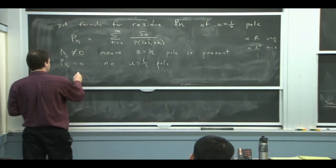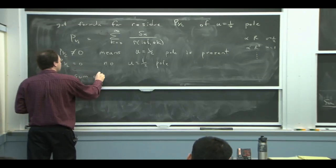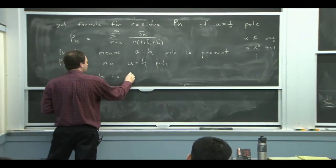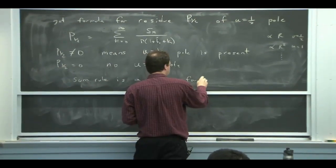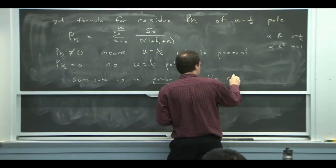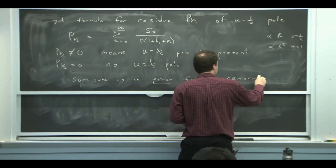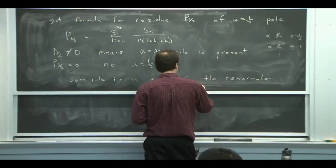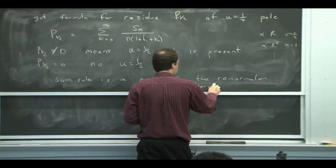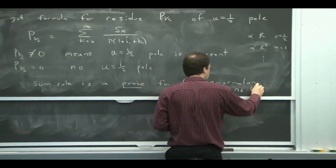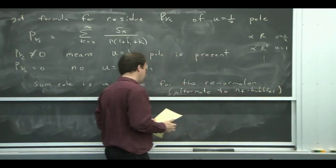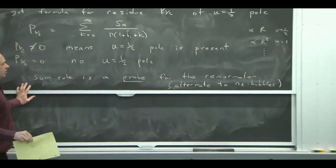All right. OK. So the sum rule is a probe, alternate probe for the renormalon. The NF bubbles are the classic one that people know about.